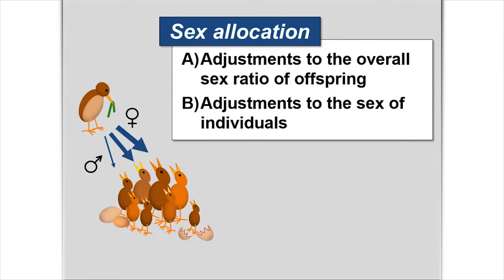Today I'm going to talk about a component of that known as sex allocation. We tend to see it in two main forms: the most common being overall adjustments to the offspring sex ratio — either overproducing sons or overproducing daughters — or more fine-tuned adjustments to the sex of individual offspring within broods. In birds, females are the heterogametic sex, meaning the egg the female lays determines the sex of the offspring. So females are thought to have some ability to potentially influence the sex of their young.